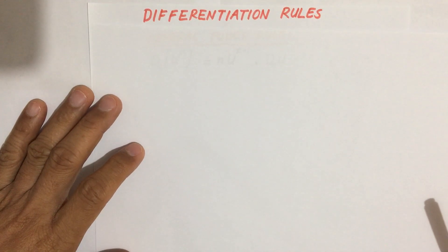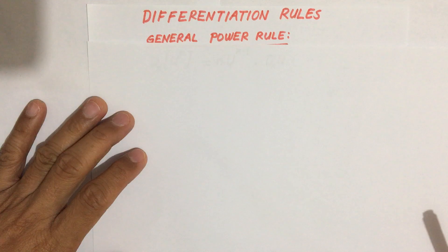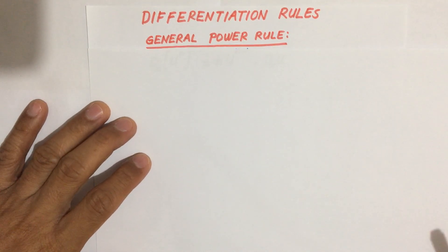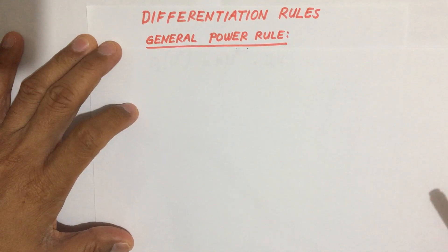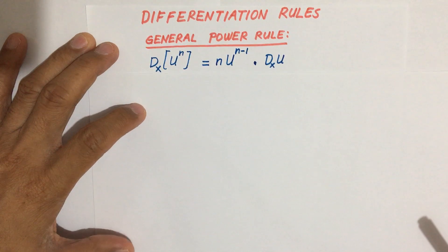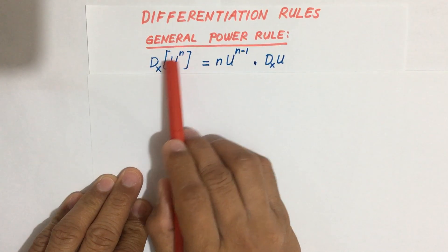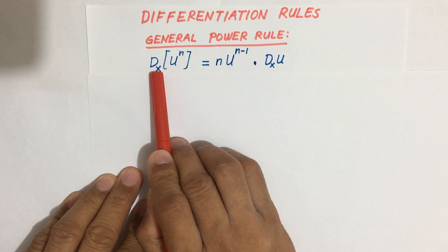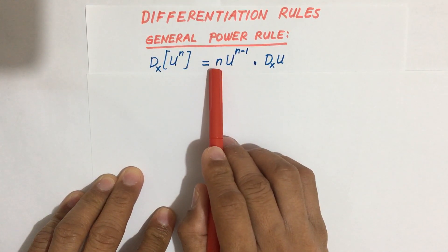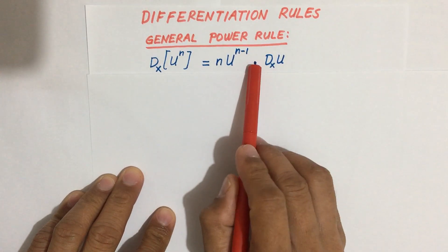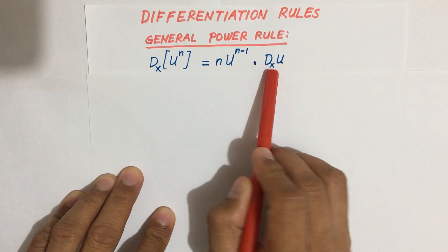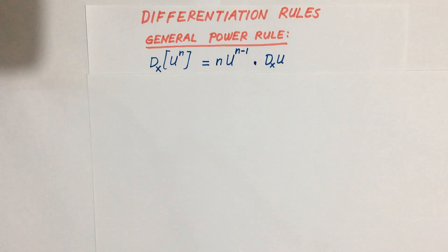Good day everyone, welcome once again to our session. We're still on the differentiation rules, and today we are going to focus our discussion on the General Power Rule. The formula is: the derivative of u to the power n with respect to x is equal to n times u to the power n minus 1, times the derivative of u with respect to x.